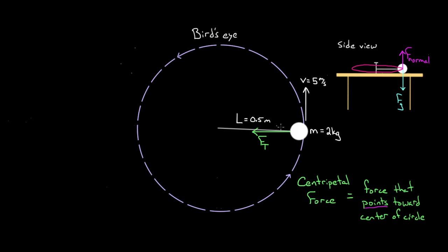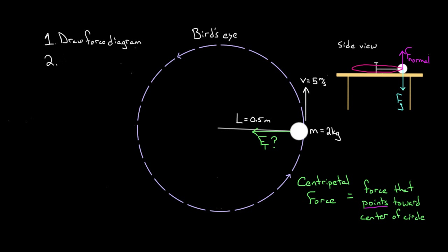Let me add some numbers. Let's say the mass of the ball is two kilograms, the rope's length is 0.5 meters, and the ball is traveling around the circle at a constant speed of five meters per second. A possible question would be: what's the force of tension in the rope? The secret to solving centripetal force problems is that you solve them the same way you solve any force problem — first draw a quality force diagram, then use Newton's second law for one direction at a time. If that direction doesn't get you what you need, apply Newton's second law again for another direction.